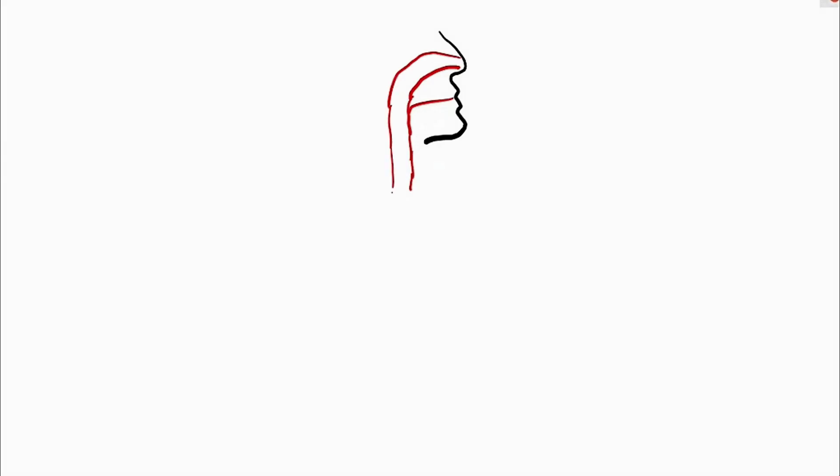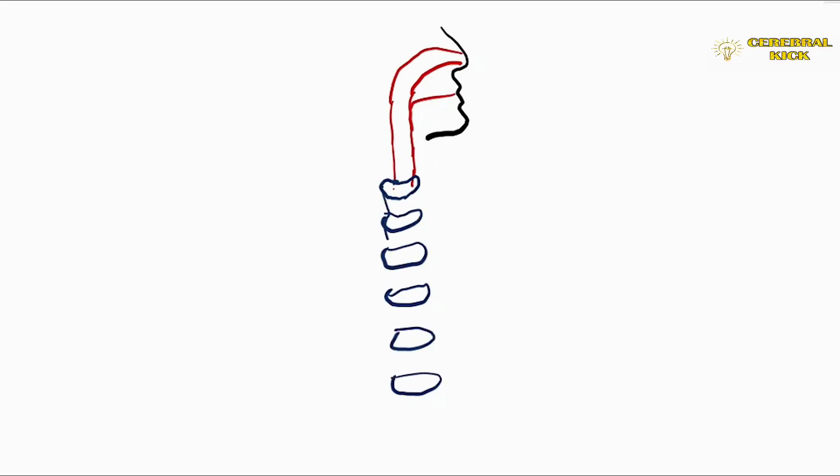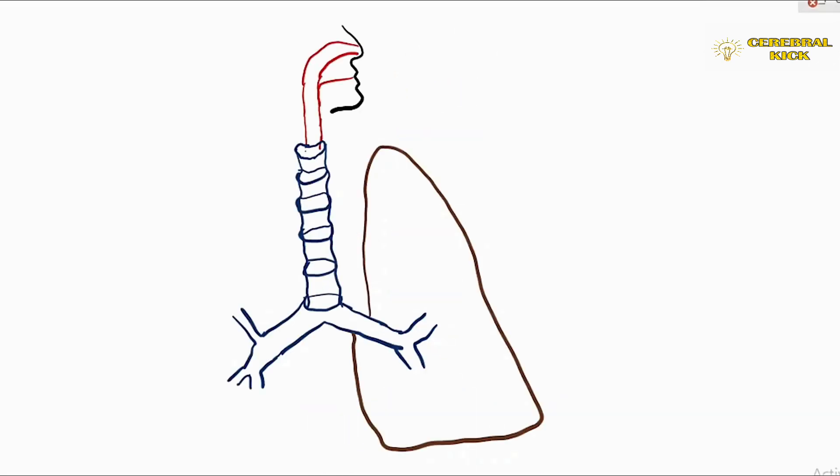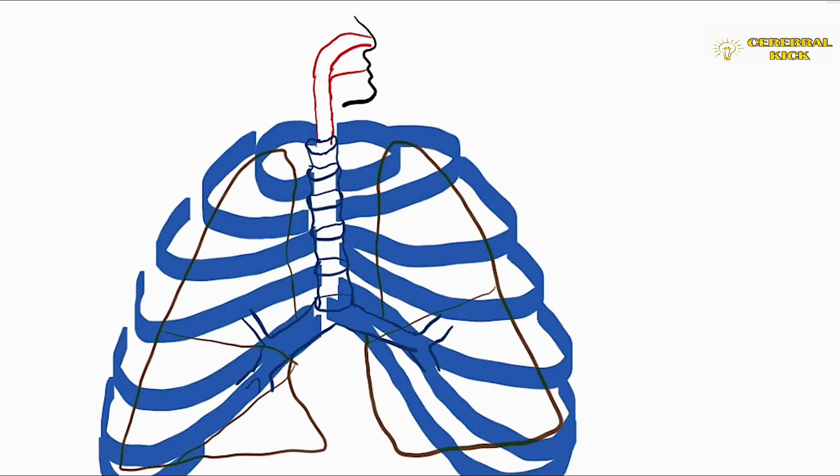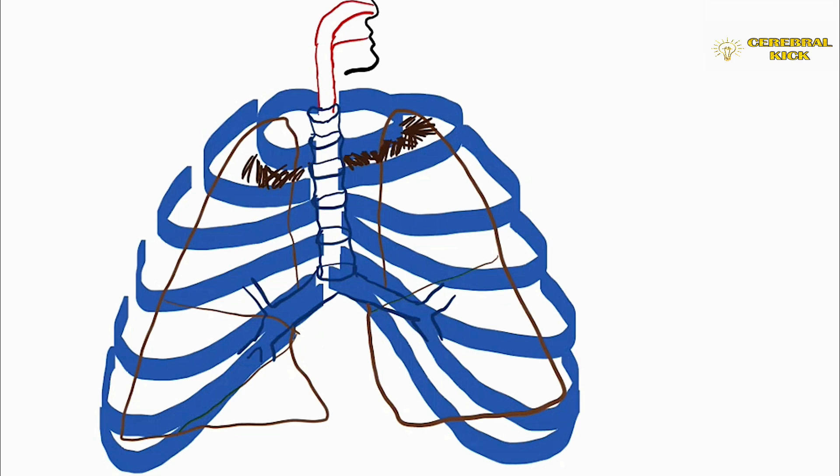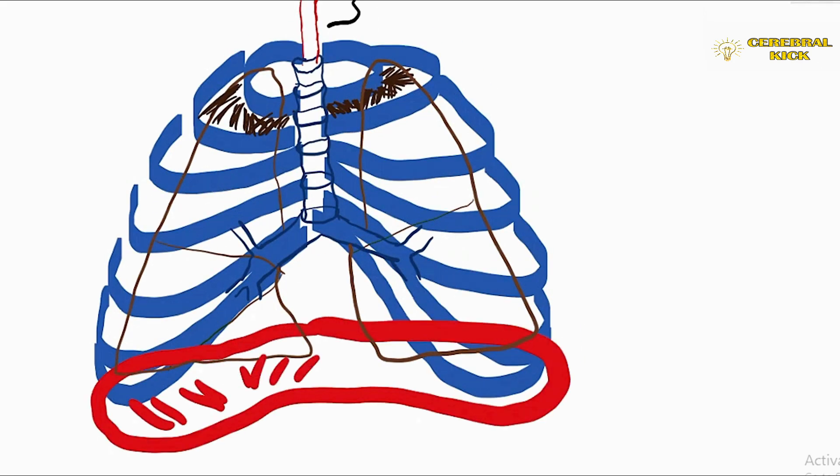I'm going to start off with the basic dissection of respiratory system. Let's go from top to bottom or from outside to inside. You can see the musculoskeletal system, the intercostal muscles, the big red colored diaphragm.